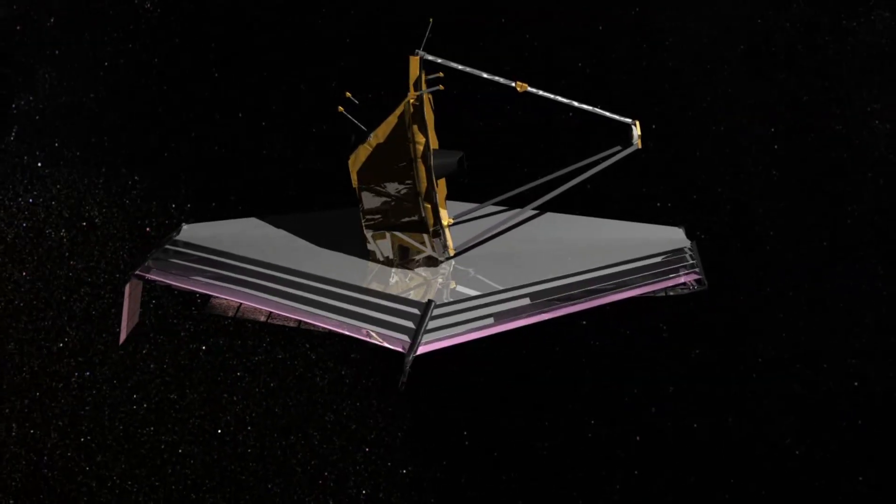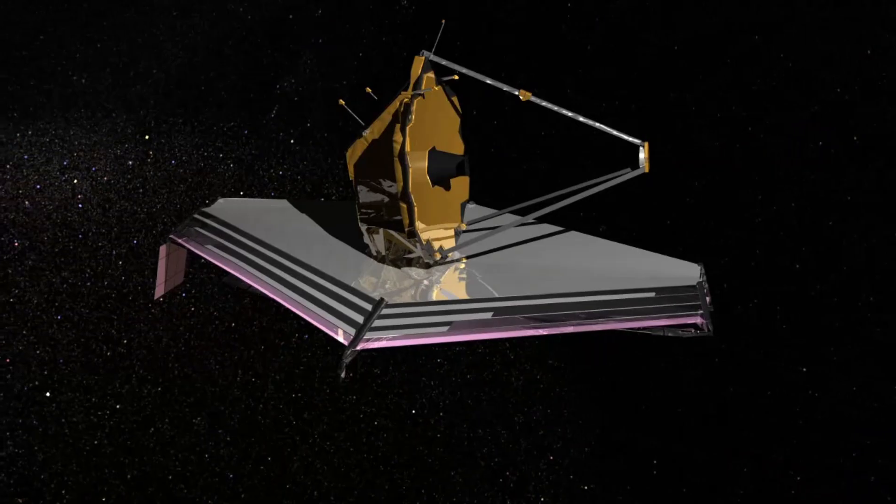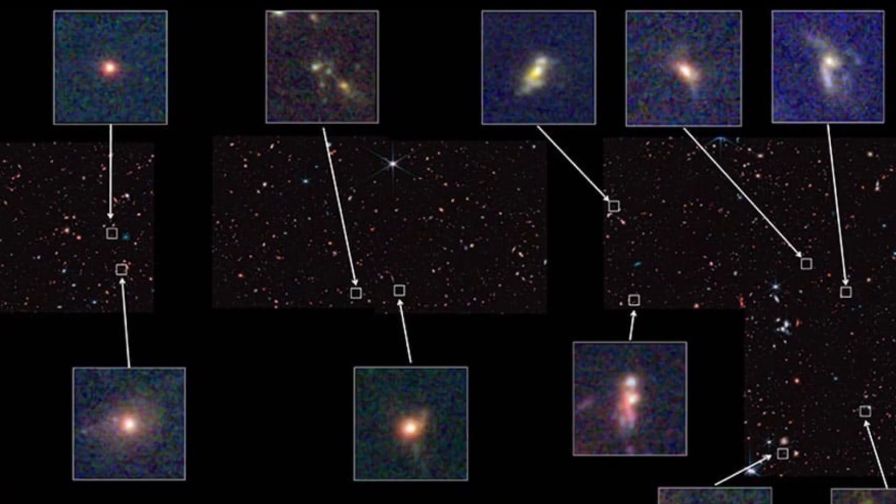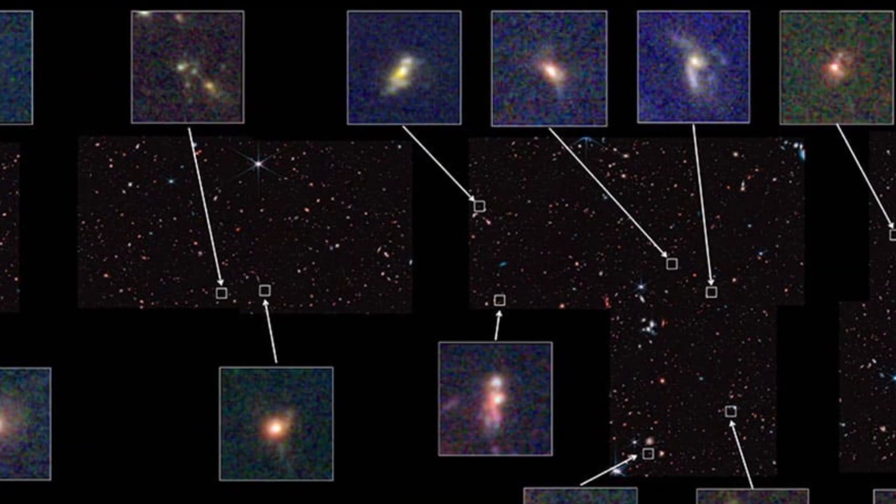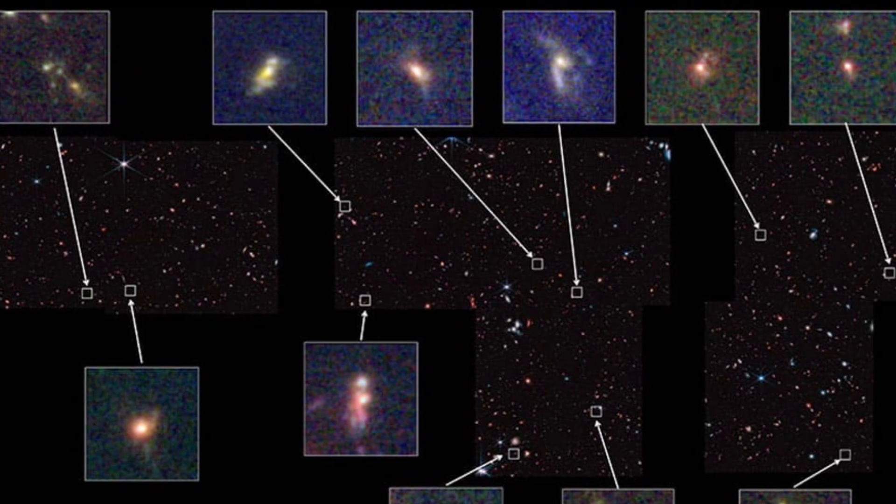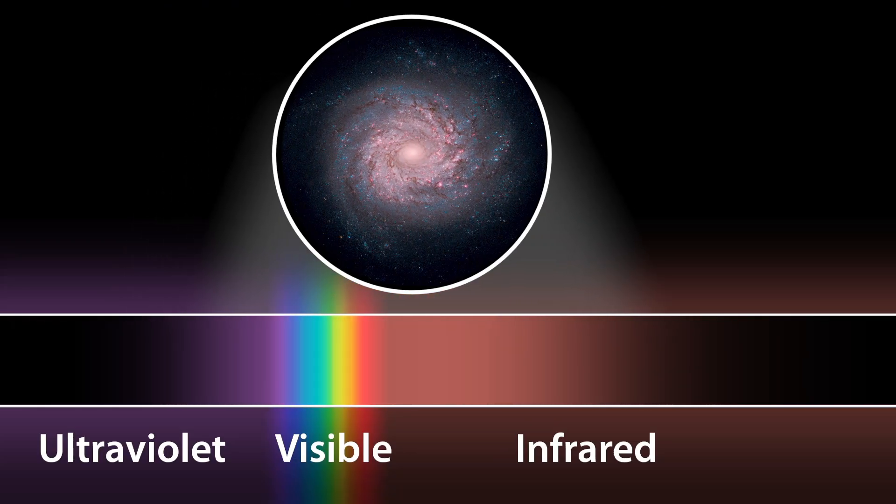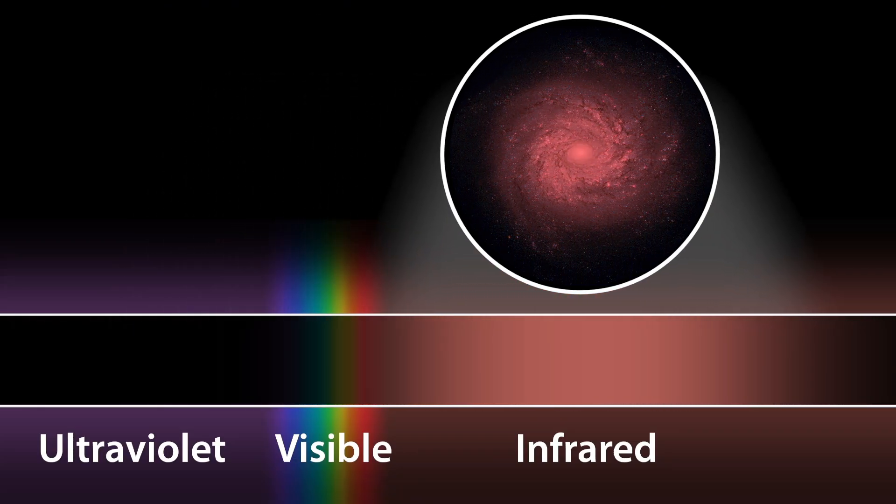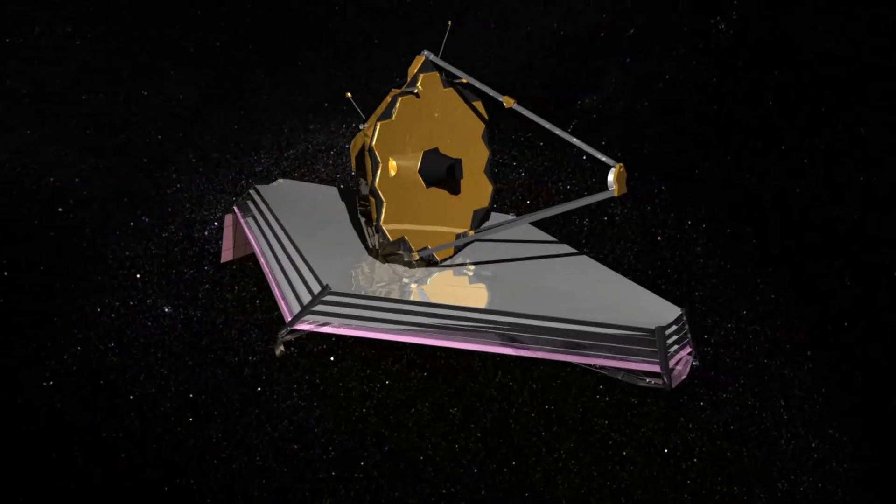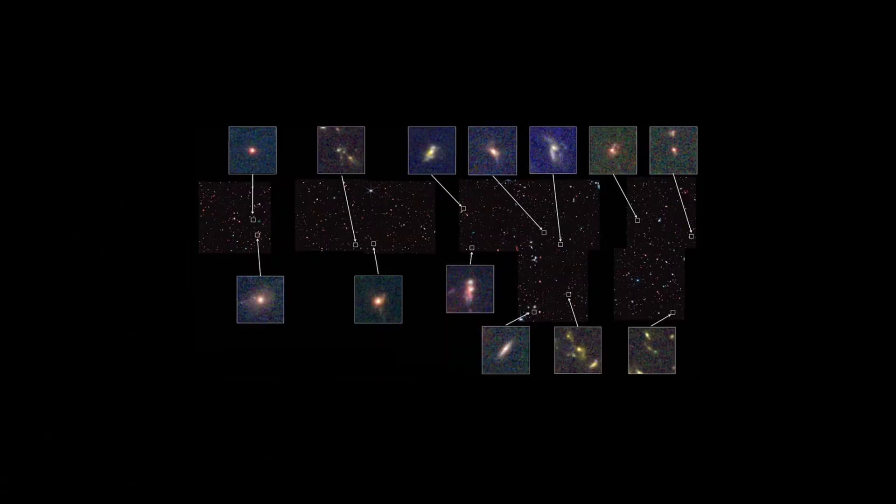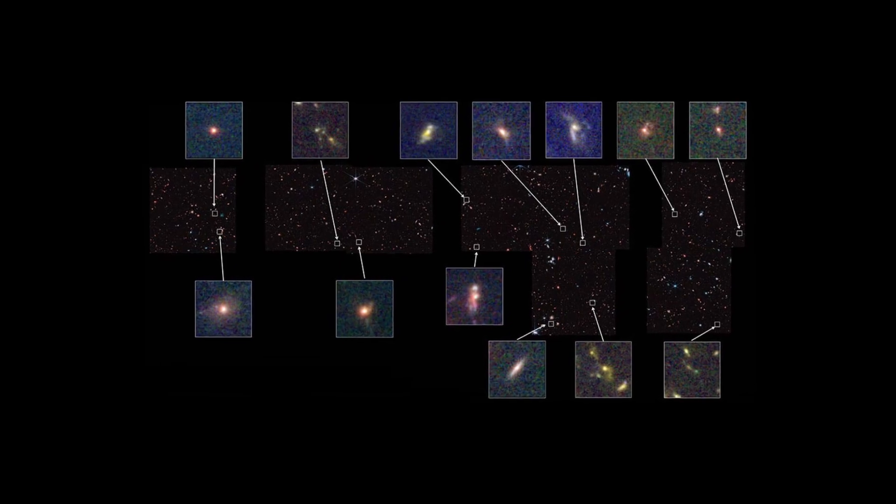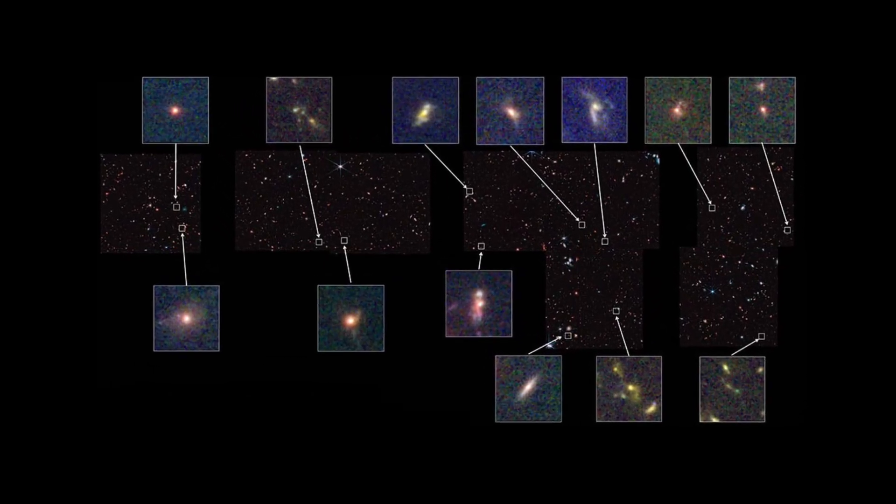However, there were difficulties with calibration with the JWST that have now been fixed. The distance to these galaxies, and therefore their age, was estimated using the relative brightness of different parts of the spectrum. As astronomers have become more familiar with the instrument, they've refined their estimates to get figures more consistent with a 14 billion year-old universe for most of them.